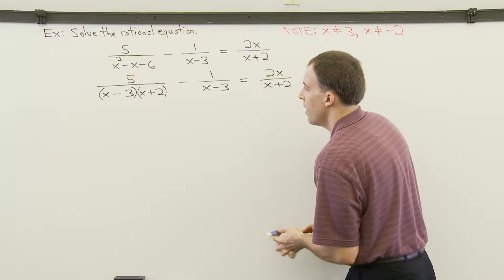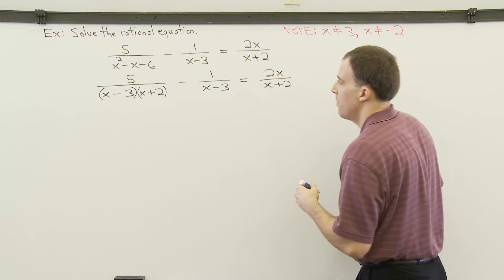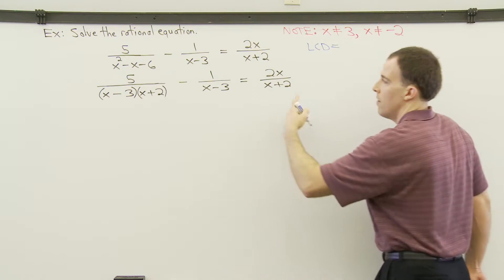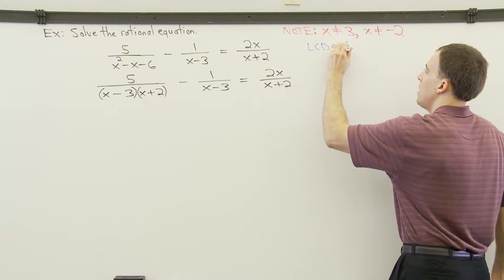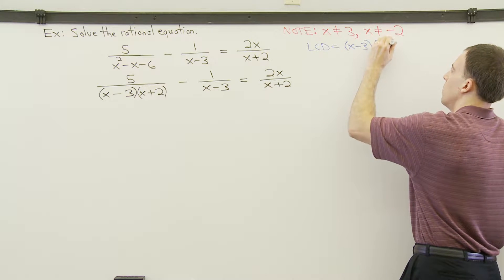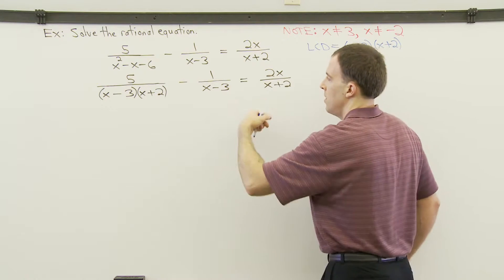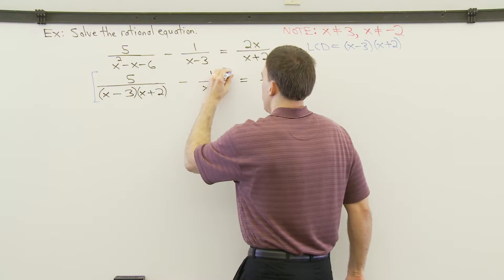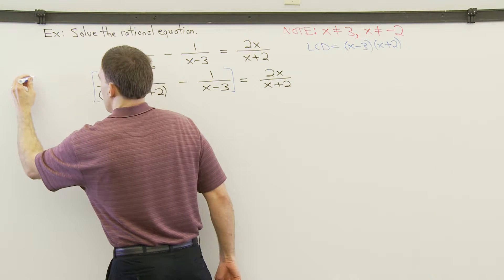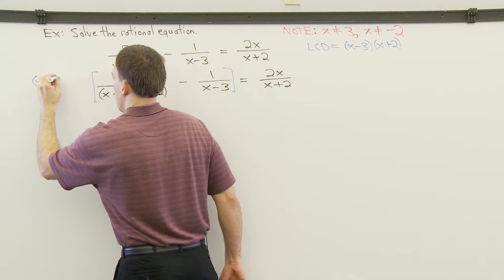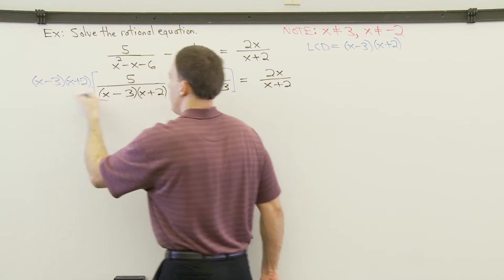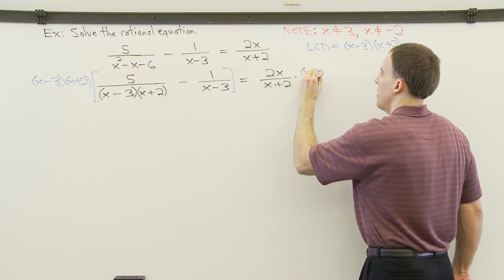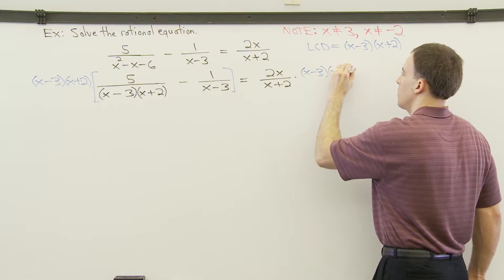Next, we multiply both sides of the equation by the least common denominator. The least common denominator is the least common multiple of all the denominators. We need x minus 3 and x plus 2 — those are the two factors that occur in these denominators. So we multiply both sides of the equation by x minus 3 times x plus 2.